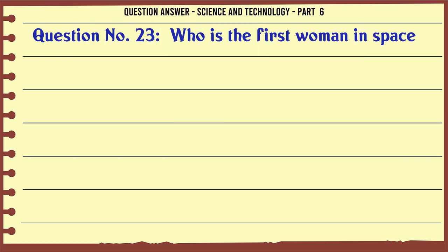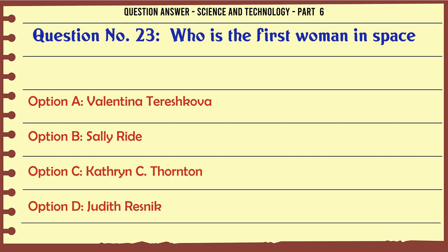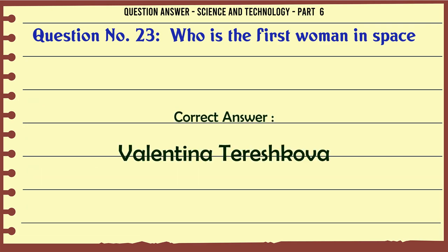Who is the first woman in space? A. Valentina Tereshkova. B. Sally Ride. C. Catherine C. Thornton. D. Judith Resnik. The correct answer is Valentina Tereshkova.